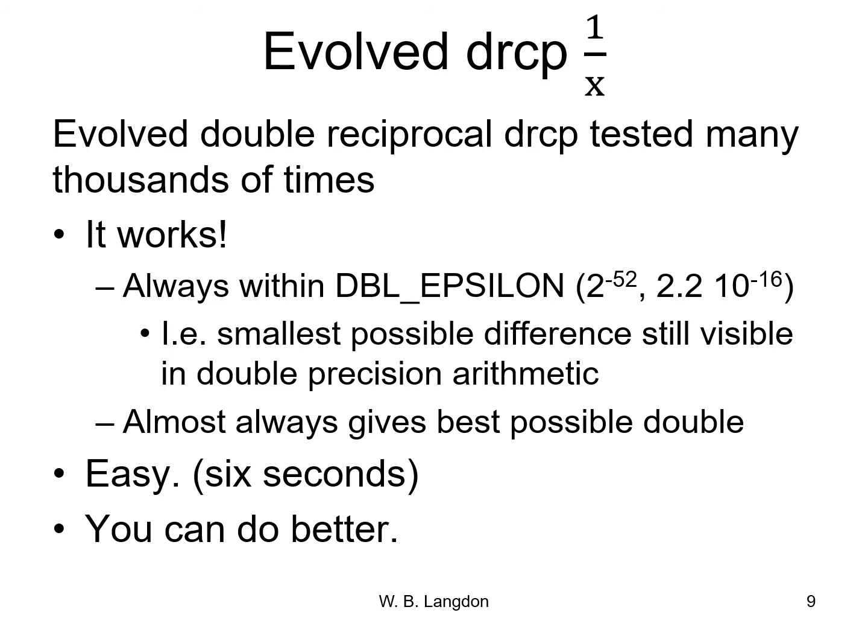External to CMA-ES, we've tested the evolved code literally many thousands of times. It works — it always gives the correct answer to within double precision. One thing I should stress is that for CMA-ES this is an easy problem: running all 512 bins took less than six seconds. I'm sure this technique could be expanded, or people could use their own techniques on data within their own programs.